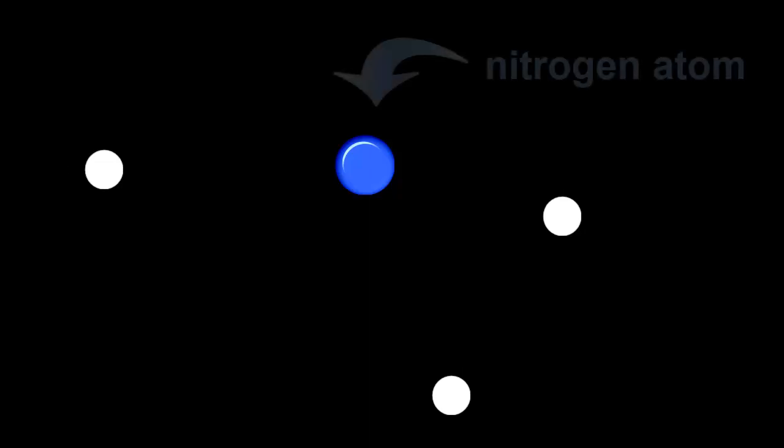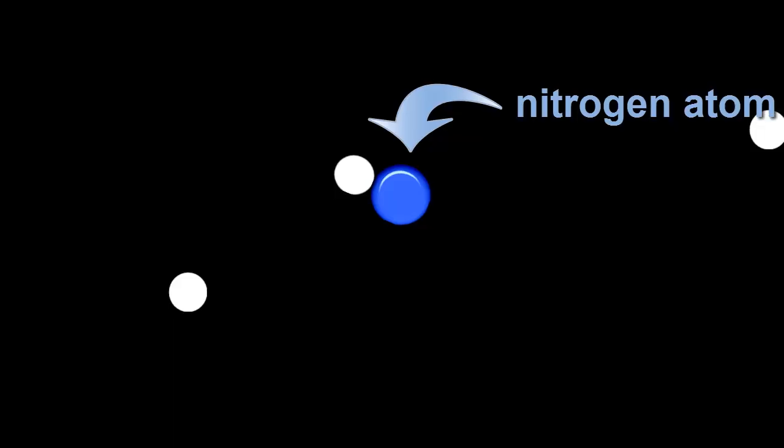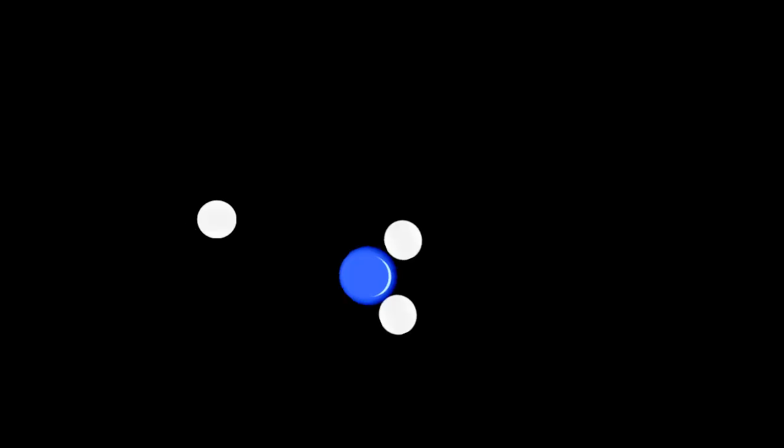Let's get back to our thought experiments. This time we'll put a nitrogen atom in the box with hydrogens. Again, when they collide they join up. One hydrogen bonds, two, three, but that's it. It can make three bonds with other atoms, but no more.